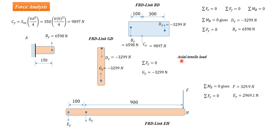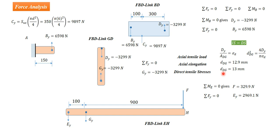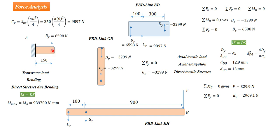Now we examine the effect of the load on each member. Link DG carries an axial load, which induces direct tensile stress. The design equation is: induced stress = design stress, i.e., Force/Area = σ_D. This gives the diameter of link DG as 13 mm. For link AB, the load is transverse, inducing bending, and the design equation using bending expression gives the diameter of link AB as 60 mm.